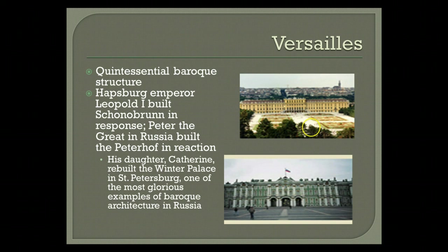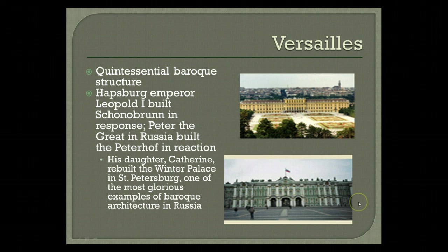Versailles, again our quintessential Baroque structure, enticed others to bring this kind of mastery into their own palace building — such as Habsburg Emperor Leopold I, who rebuilt Schönbrunn in Austria in response to Versailles, and Peter the Great in Russia building Peterhof largely under the influence of Versailles. His daughter Catherine also rebuilt the Winter Palace in St. Petersburg, one of the most glorious examples of Baroque architecture in Russia. Frederick I in Prussia began building his palace in Berlin in 1710, though that ended up more in the Rococo style, which we'll discuss later.